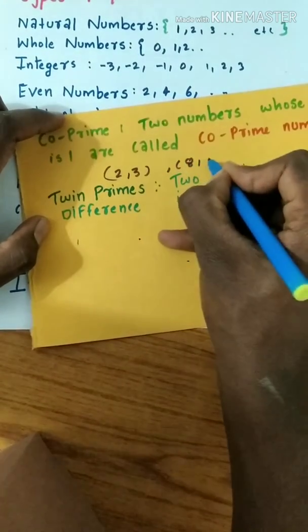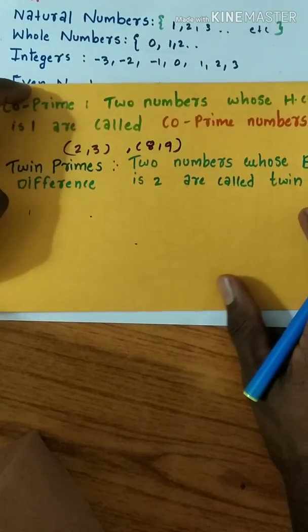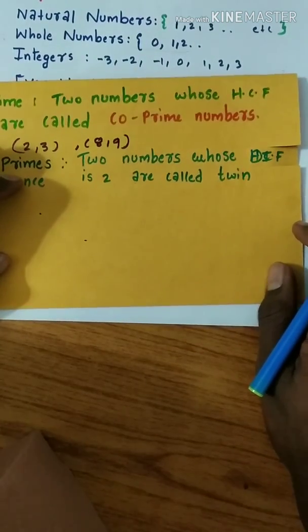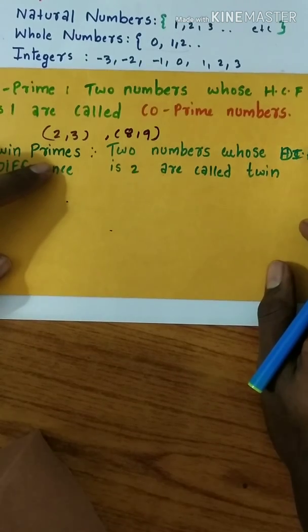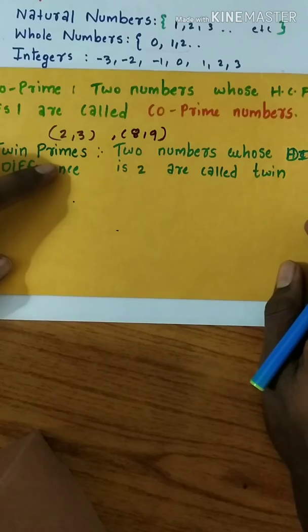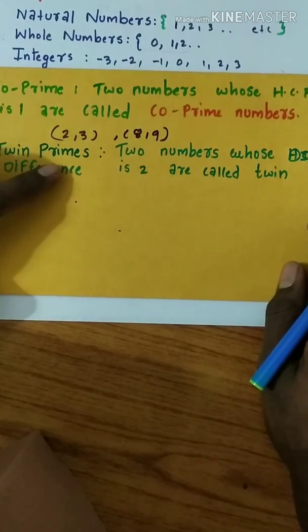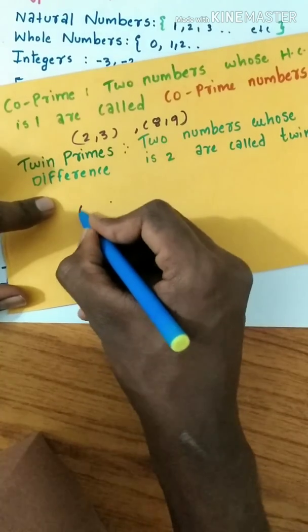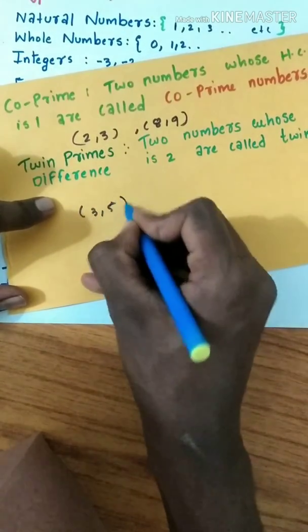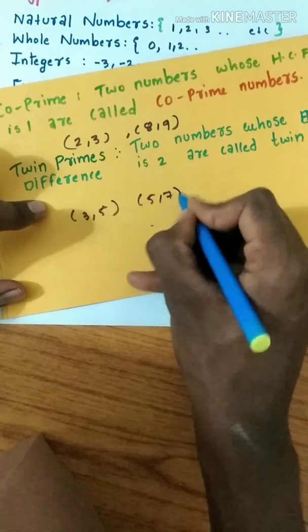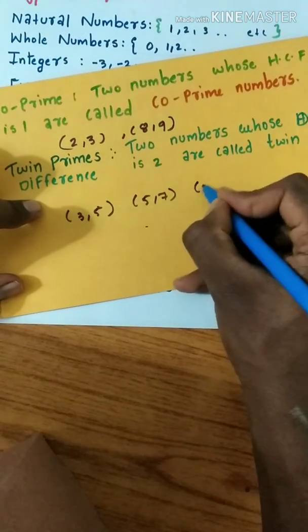Twin primes - numbers whose difference is 2 are called twin primes. Examples: (3, 5), (5, 7), (11, 13).